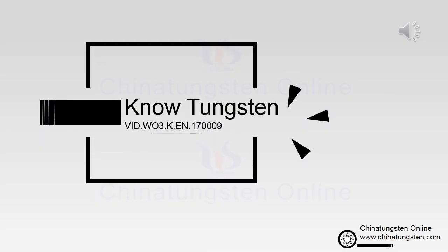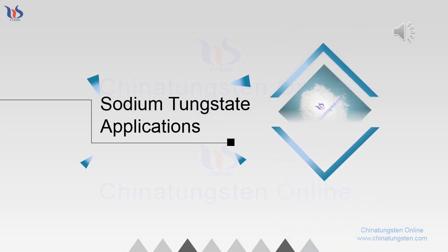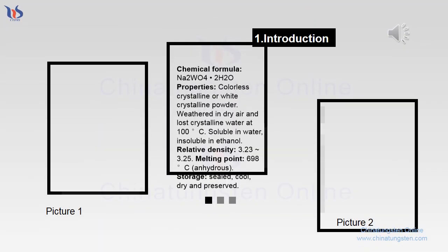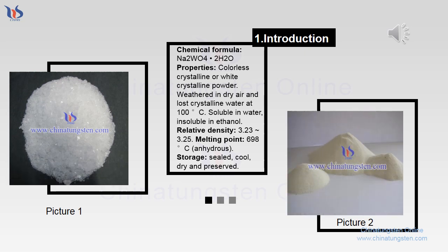Sodium Tungstate Applications. Introduction: Chemical formula Na2WO4·2H2O. Properties include colorless crystalline or white crystalline powder. It weathers in dry air and loses crystalline water at 100 degrees Celsius. It is soluble in water.